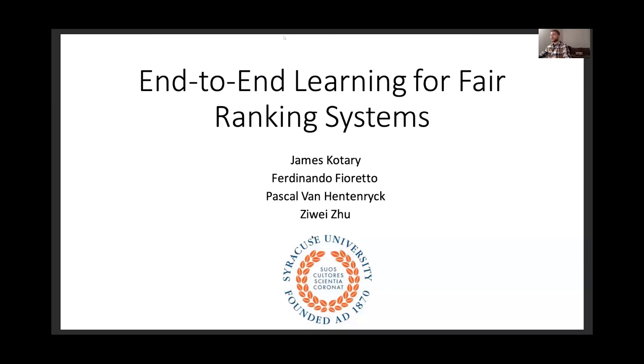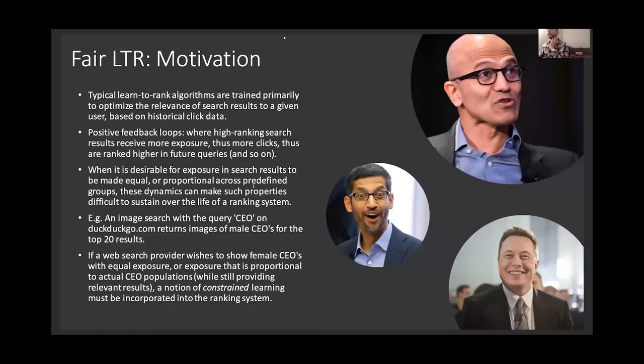Hi, this is James Kateri and today I'm going to talk about end-to-end learning for fair ranking systems. So this is a learning to rank paper, and in learning to rank typically you're training a model to produce rankings of a list of items in order to optimize the relevance of the items to a given user's query.